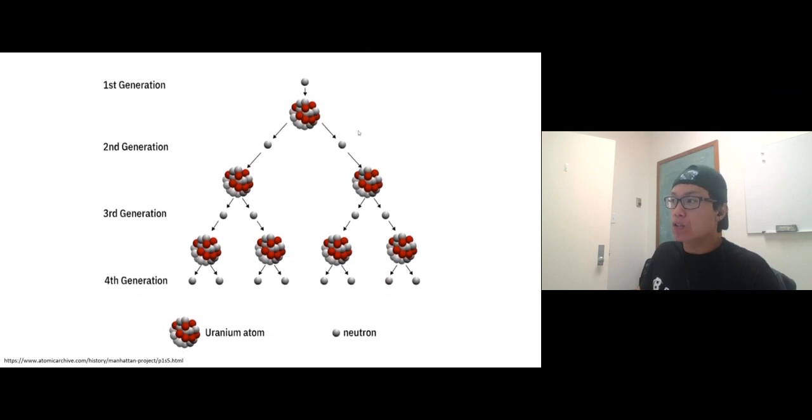It looks like a chain reaction right here. The first generation produces three neutrons. Each neutron will induce one more nuclear fission making three more neutrons, so you get nine in the second generation. Nine times three equals 27 total in the third generation, and so on.